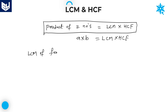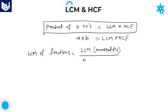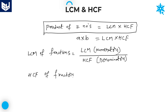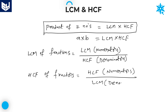Now, how to calculate LCM and HCF of fractions. LCM of fractions equals LCM of numerators divided by HCF of denominators. Similarly, HCF of fractions equals HCF of numerators divided by LCM of denominators.